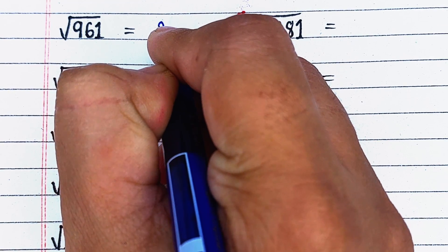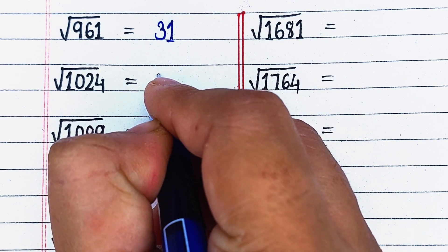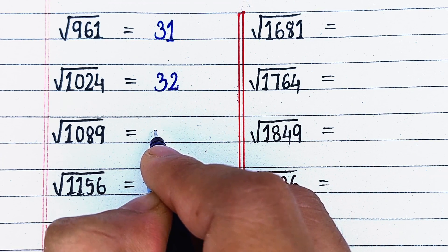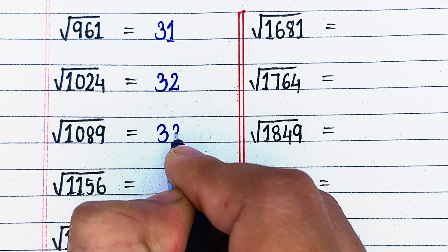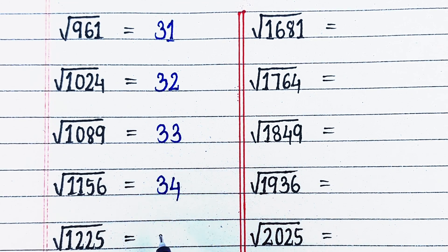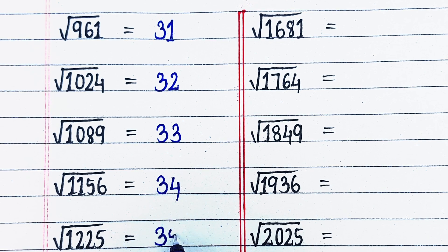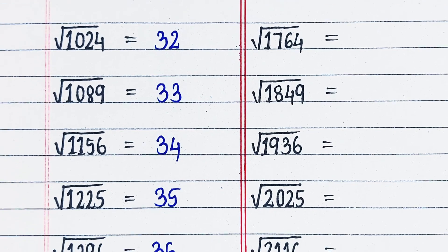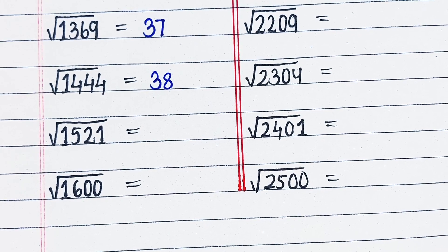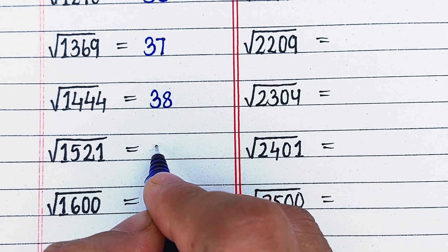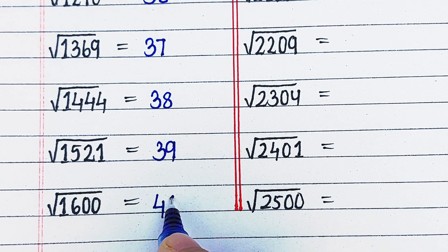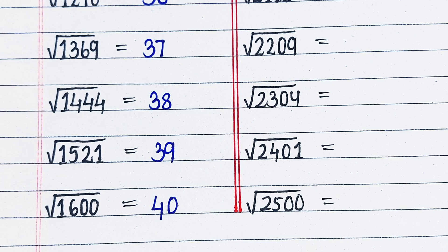Square root of 961 is 31. Square root of 1024 is 32. Square root of 1089 is 33. Square root of 1156 is 34. Square root of 1225 is 35. Square root of 1296 is 36. Square root of 1369 is 37. Square root of 1444 is 38. Square root of 1521 is 39.